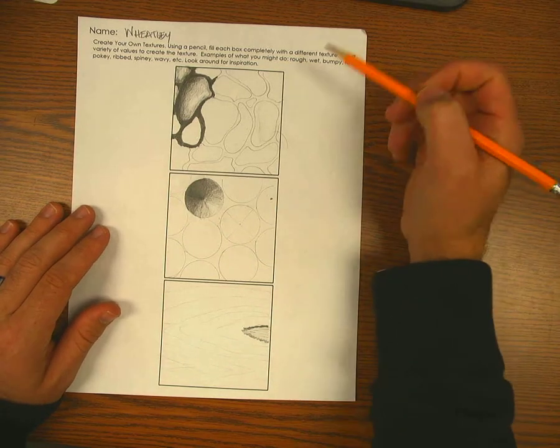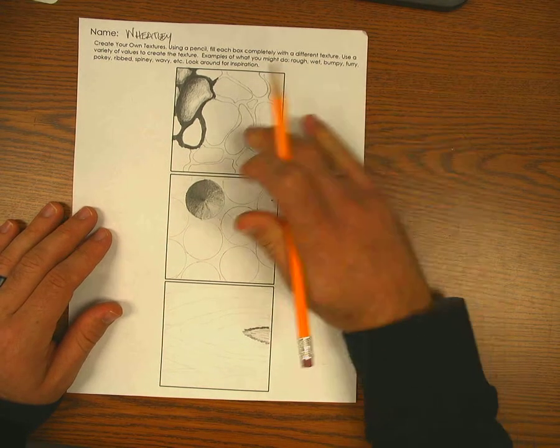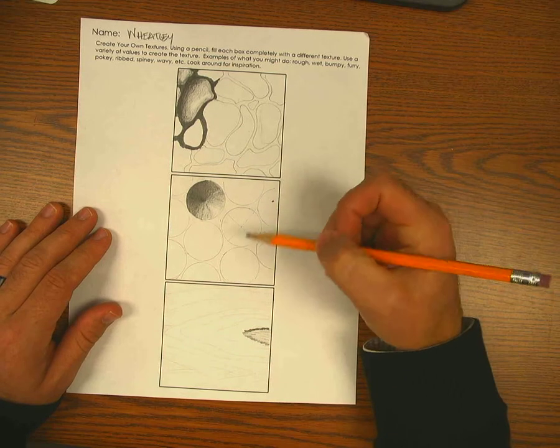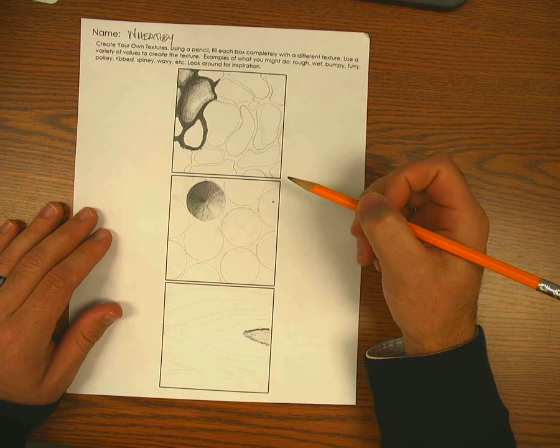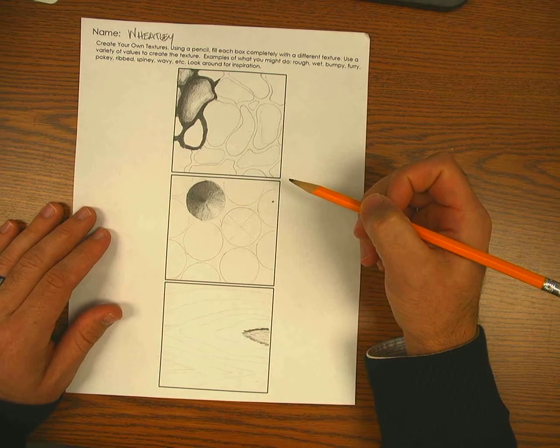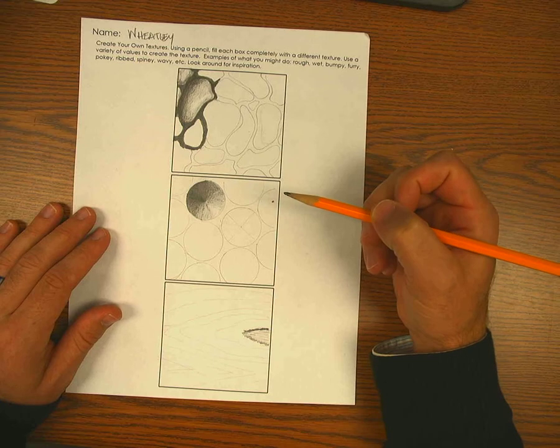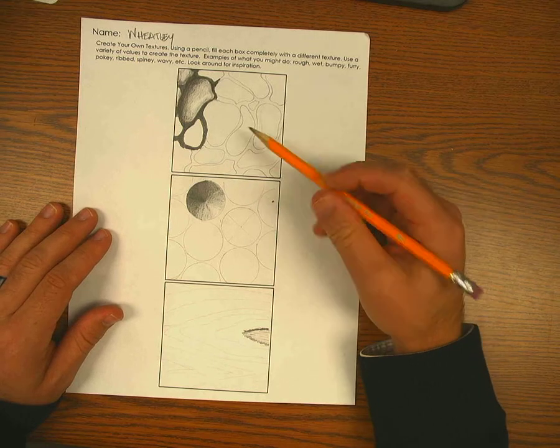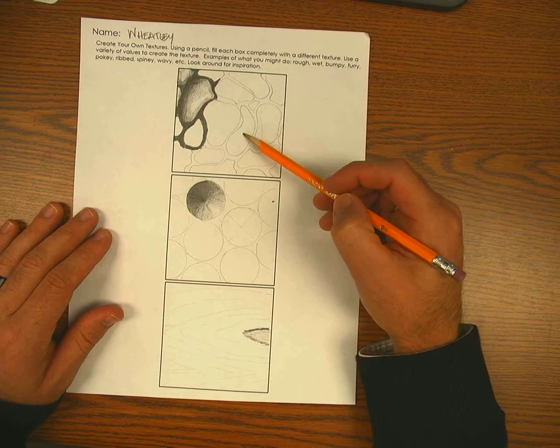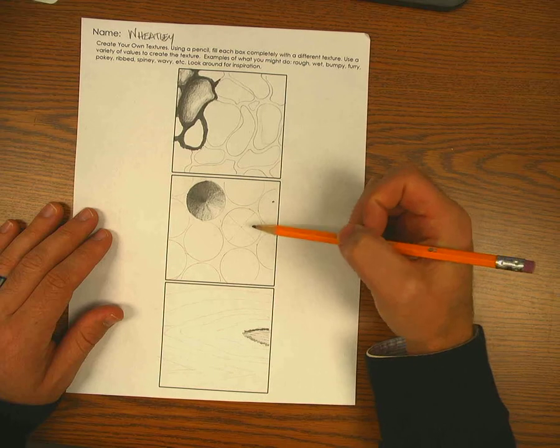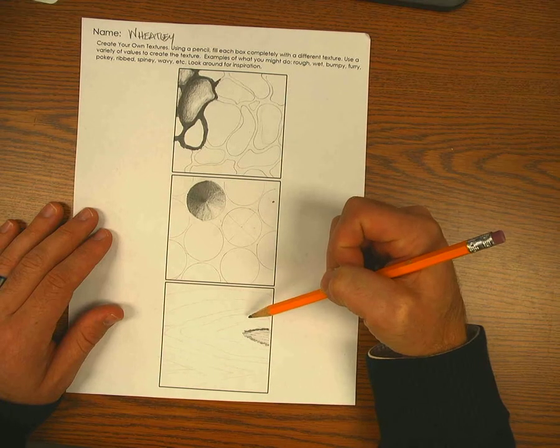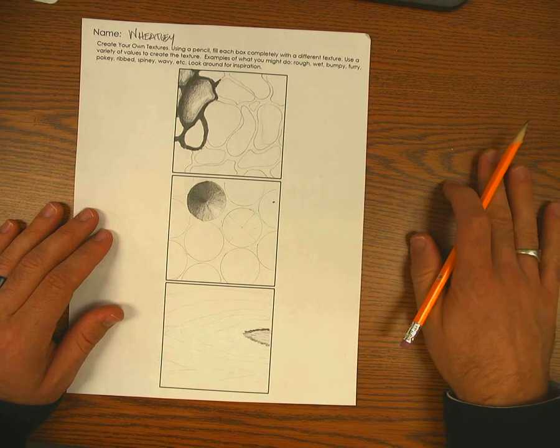Hi everybody, for this assignment we are doing more texture. You get to create your own. We have three different boxes that you need to fill in completely, and you can either draw from a reference by looking at something or you can make it up. I've done some of that. I've made up this top box and this box, and down here on the bottom I'm going to do some wood grain which is actually just from my desk.